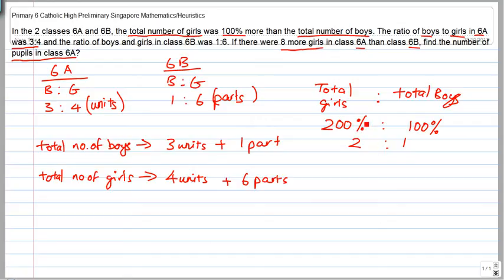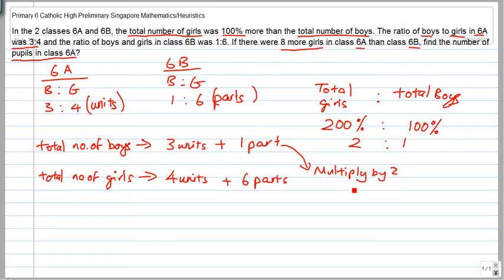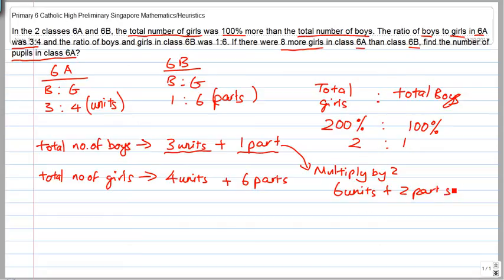So there are 2 times as many girls as boys — this statement means there are twice as many girls as boys. For comparison, can I multiply the boys' total by 2? So if I multiply by 2: 3 units multiplied by 2 gives 6 units, and 1 part multiplied by 2 gives 2 parts. So this here is equivalent to this.